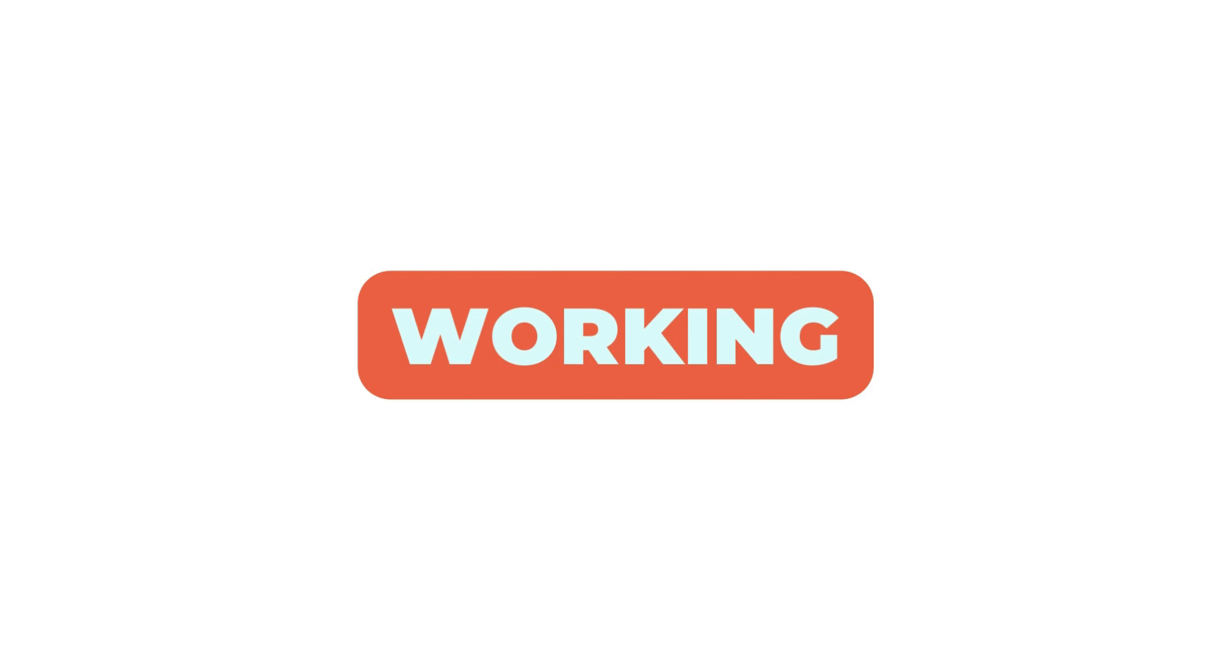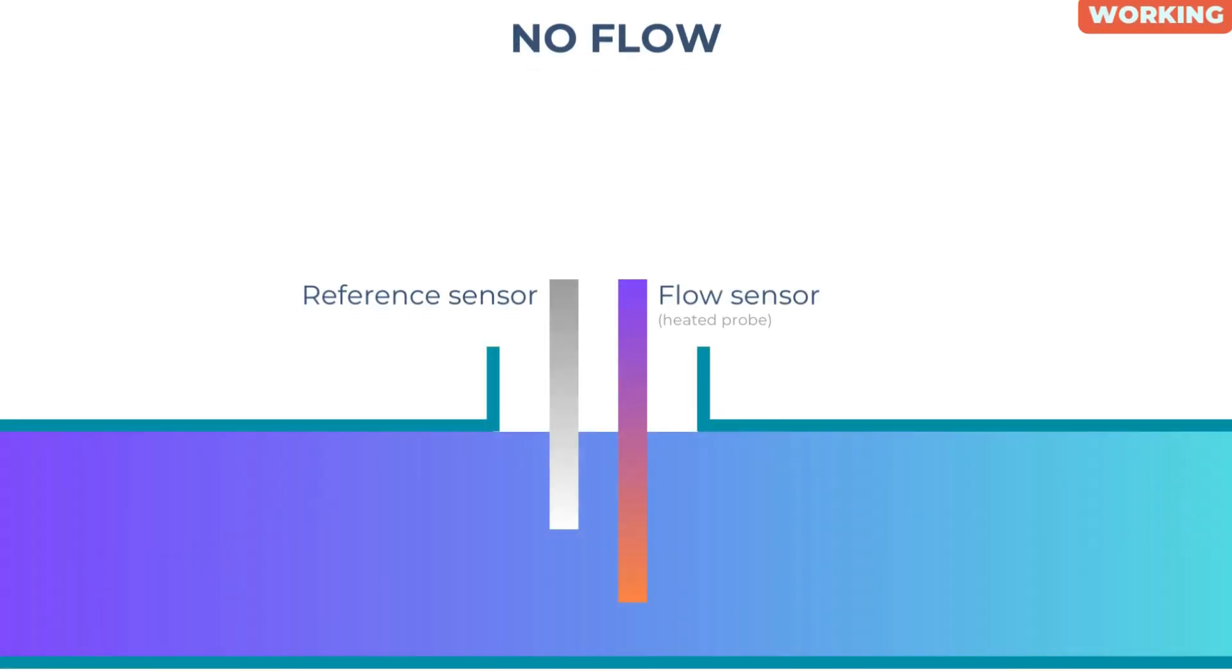Working of thermal mass flow meter: When there is no flow, the circuit maintains a continuous overheat, which is a constant temperature difference between the flow sensor and reference sensor.